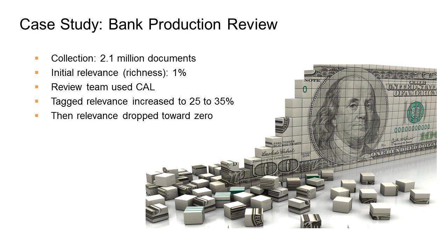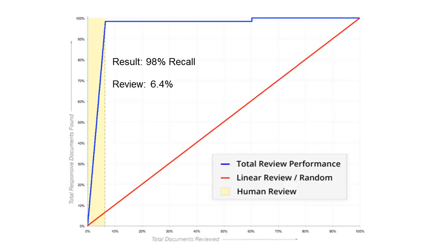Then, after a while, it drops to zero, so we stop the review. We do a big sample of what's left over in this population, and we only find two relevant documents out of just under 6,000 that we sampled. What that meant statistically is that the team had found 98% of the relevant documents with a high degree of confidence, and yet they'd only reviewed about 6% of the 2 million — roughly 120,000 documents.